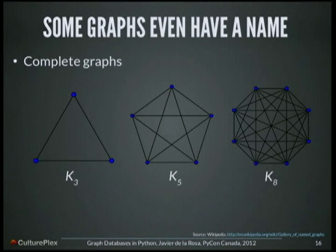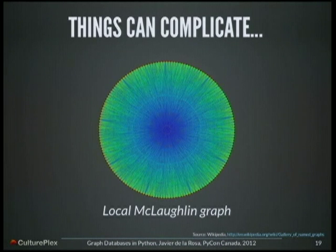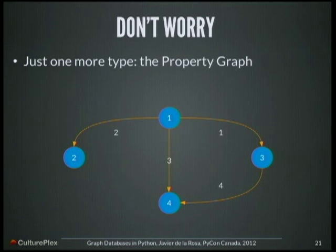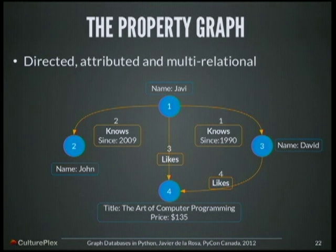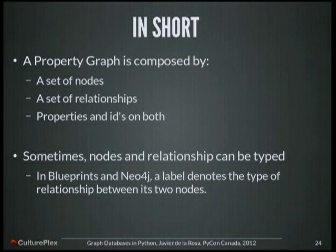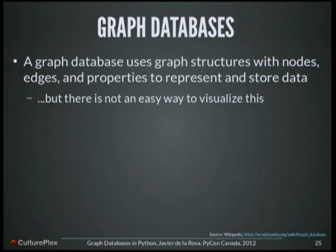We also have hypergraphs in which a relationship is able to connect more than two nodes. Things can complicate more and more — there are even graphs with their own names like complete graphs, stars, snarks, and things like the Loch and Möbius–Kantor graph. But don't worry. The one more type I want to mention is the property graph. A property graph is a directed, multi-attribute, relational graph in which every element — both edges and nodes — has an ID, and also uses a key-value store for both. So a property graph is composed by a set of nodes, a set of relationships, and properties and IDs on both. Sometimes, like in Blueprints or Neo4j, relationships can be labelled, which is also called the type. Graph databases use property graphs to represent and store data.